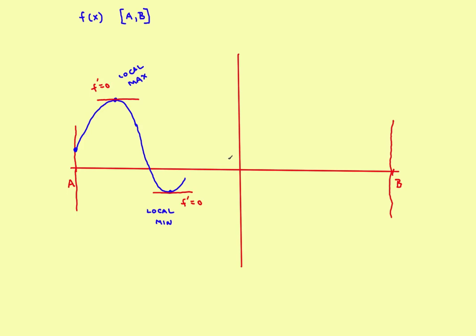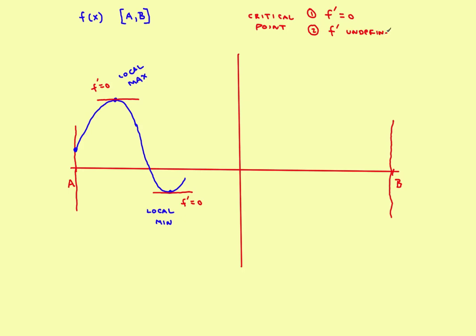These points have a special name: they're called critical points. A critical point consists of two parts — it can only occur where the first derivative is equal to zero, or where the first derivative is undefined. So at a critical point, either the first derivative is equal to zero, or it's undefined.